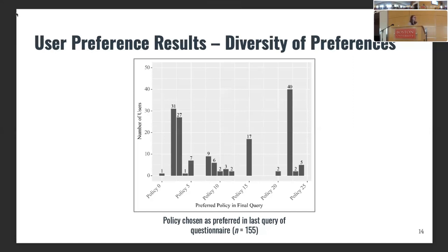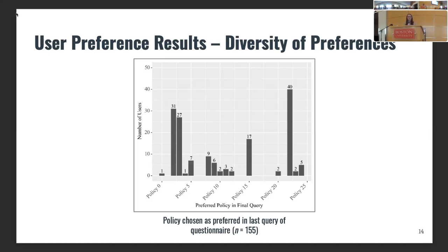To jump into our results: first I'm showing the diversity of preferences reported by individuals. The chart shows the results of that last comparison where they say whether they prefer the policy recommended by robust or by random. On the x-axis is the index of the policy they preferred, and on the y-axis is the number of users that reported that preference. We can see some clusters of policies that many Turkers do prefer, but overall there's a great variety. This shows that it's worth devising a mathematically rigorous formulation to figure out individual preferences — if one dominating policy existed that everyone liked, we wouldn't need this whole procedure.